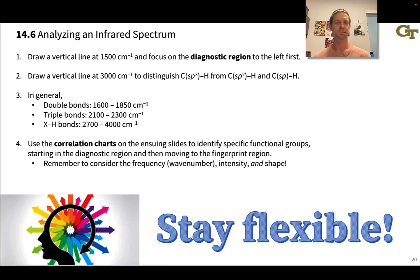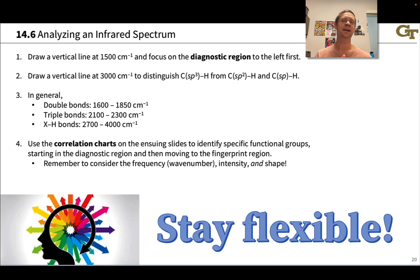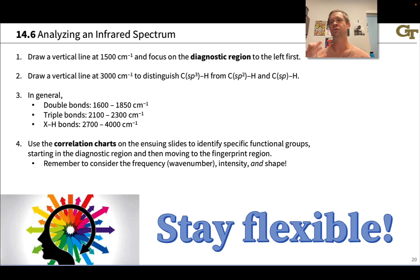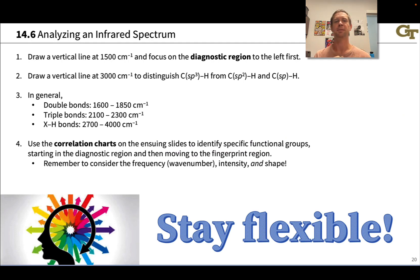When analyzing an infrared spectrum, the most important thing is to think flexibly. You'll see tables and textbook ranges for typical infrared absorption bands, but a signal slightly outside those ranges is not uncommon. Committing dogmatically to a particular range or functional group can lead you astray. Some concrete steps: draw a vertical line at 1500 wavenumbers and look to the left first — that's the diagnostic region where most characteristic peaks appear. You can also draw a line at 3000 wavenumbers: to the left are SP2 and SP hybridized C-H bonds; to the right are SP3 hybridized C-H bonds.